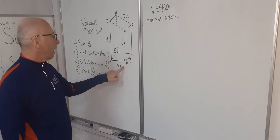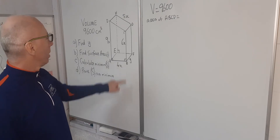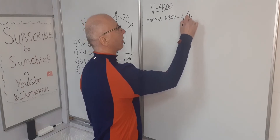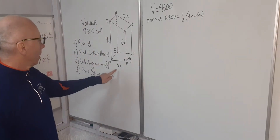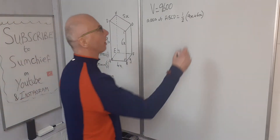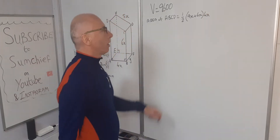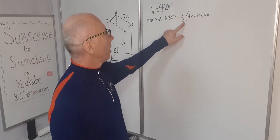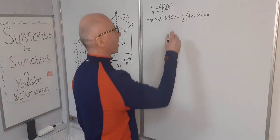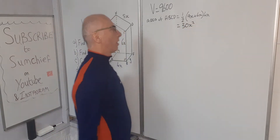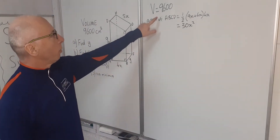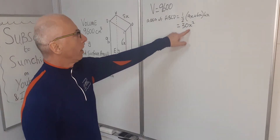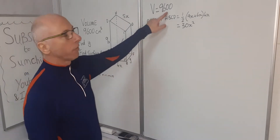So we've got sides 9x and 6x. We take half of 9x plus 6x, then multiply by the height 4x. So 9x plus 6x is 15x, and 15 times 4 is 60, giving 60x squared. Half of that is 30x squared — that's the area of face ABCD. We then multiply this by y to get the volume: 30x squared times y equals 9600.